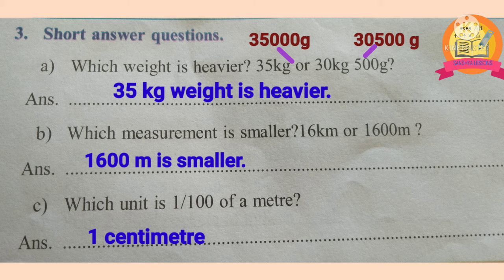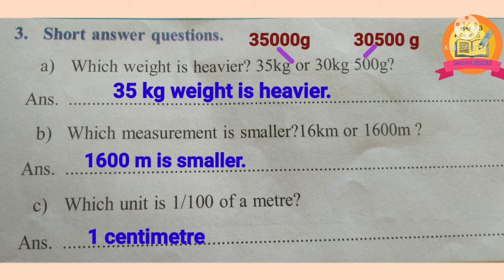Third problem. Question A: which weight is heavier — 35 kg or 30 kg 500 grams? Converting to grams: 35 kg equals 35,000 grams, and 30 kg 500 grams equals 30,500 grams. So 35 kg is heavier. Question B: which measurement is smaller — 16 kilometers or 1600 meters? 1600 meters is smaller. Question C: which unit is 1/100 of a meter? 1 centimeter. Thank you for watching.